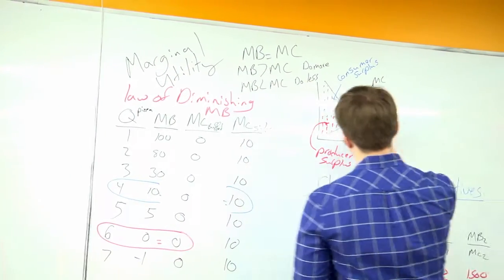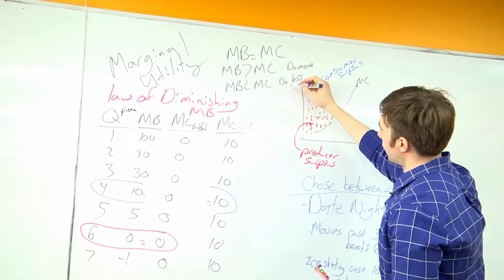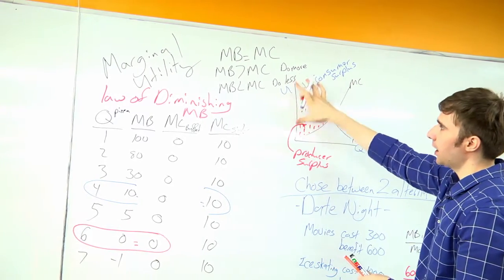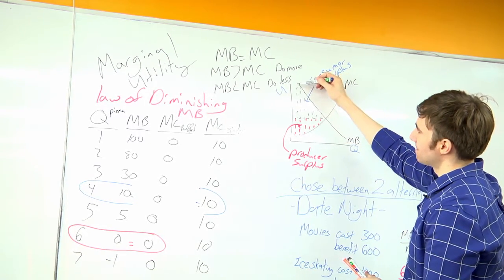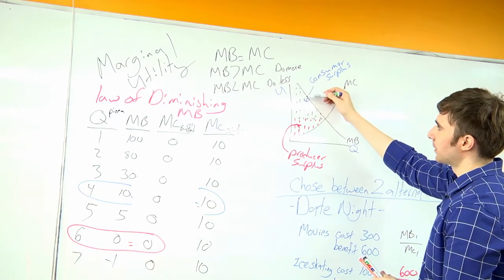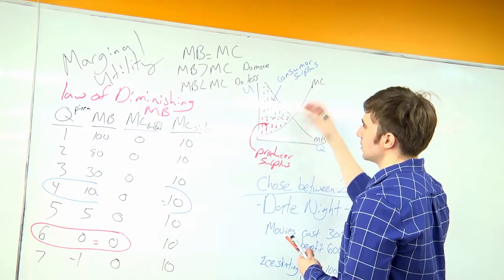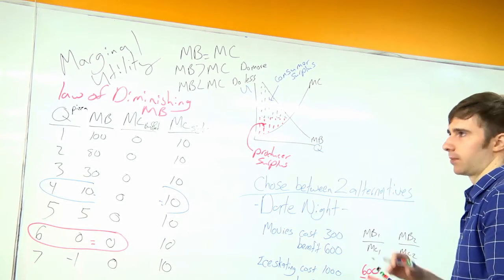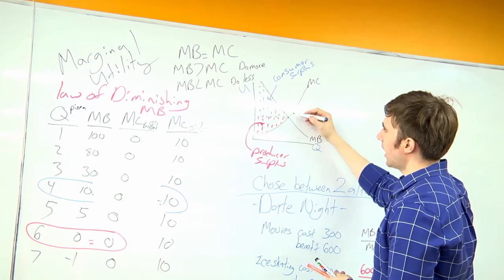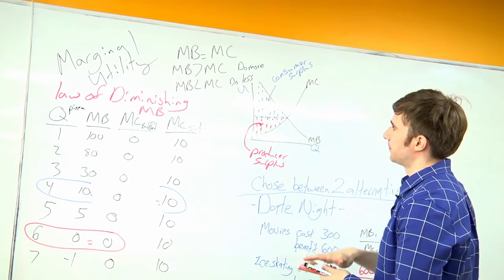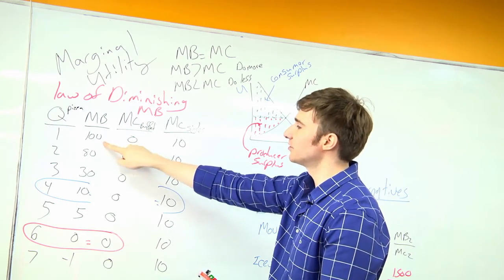Looking at this on a graph where I have utility or my cost and my quantity. So my benefit is falling. As I consume more, I'm getting less and less happy off each additional unit. And my marginal cost would be increasing from a producer's standpoint. When we look at this graph, we'll settle on some price.